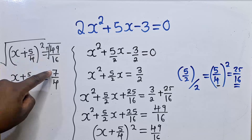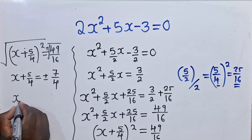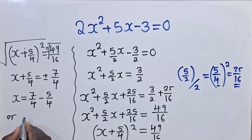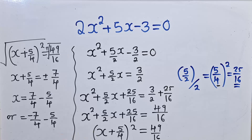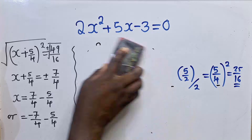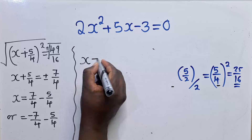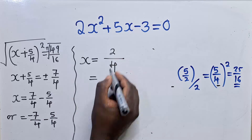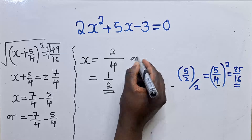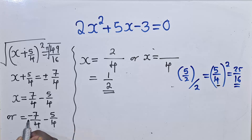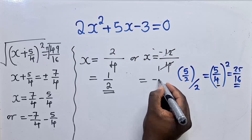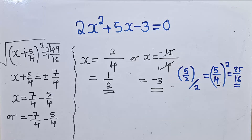The square root of 49 is 7 and the square root of 16 is 4. So x = 7/4 - 5/4, or the other solution is x = -7/4 - 5/4. For the first, the lowest common denominator is 4 and 7 - 5 = 2, so when we simplify the solution is 1/2. For the second, -7 - 5 = -12; dividing by 4 gives us -3. So these are the two solutions from method 1.